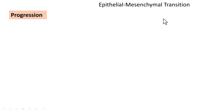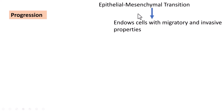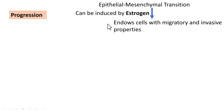Once endometrial glands are in the myometrium, we need to understand the reasons for progression of adenomyosis. The most important is epithelial mesenchymal transition (EMT). EMT endows the endometrial cells and stroma with migratory and invasive properties, and this EMT is induced by estrogen.